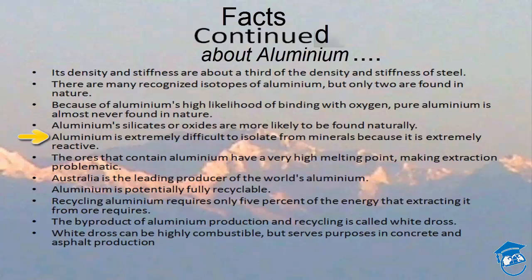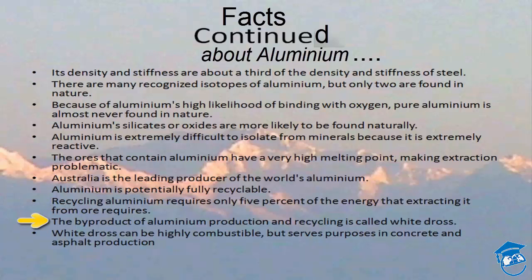Aluminium silicates or oxides are more likely to be found naturally. It is extremely difficult to isolate from minerals because it is extremely reactive. The ores that contain aluminium have a very high melting point, making extraction problematic. Australia is the leading producer of the world's aluminium. Aluminium is potentially fully recyclable; the recycling process requires only 5% of the energy that extracting it from ore requires. The byproduct of aluminium production and recycling is called white dross, which can be highly combustible but serves a purpose in concrete and asphalt production.